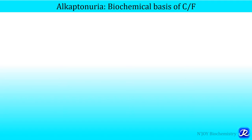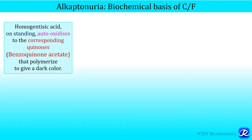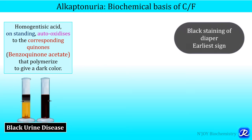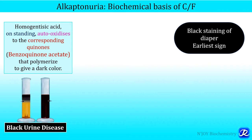The first characteristic feature is blackening of urine on standing. In alkaptonuria, there is excretion of homogentisic acid in urine, and on standing — when exposed to air or sunlight — it oxidizes to benzoquinone acetate, which polymerizes to give a dark color. Darkening starts from the top layer in a test tube. This is also called black urine disease. Black staining of diapers is one of the earliest signs seen in neonates with this condition.